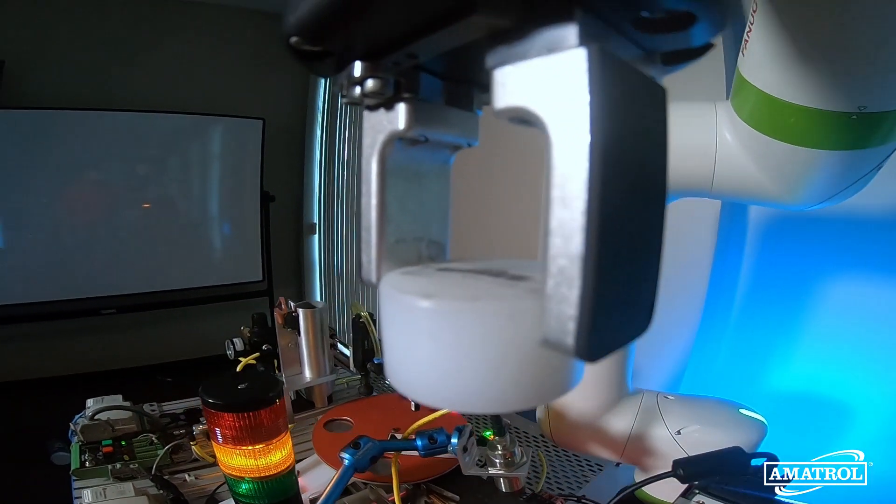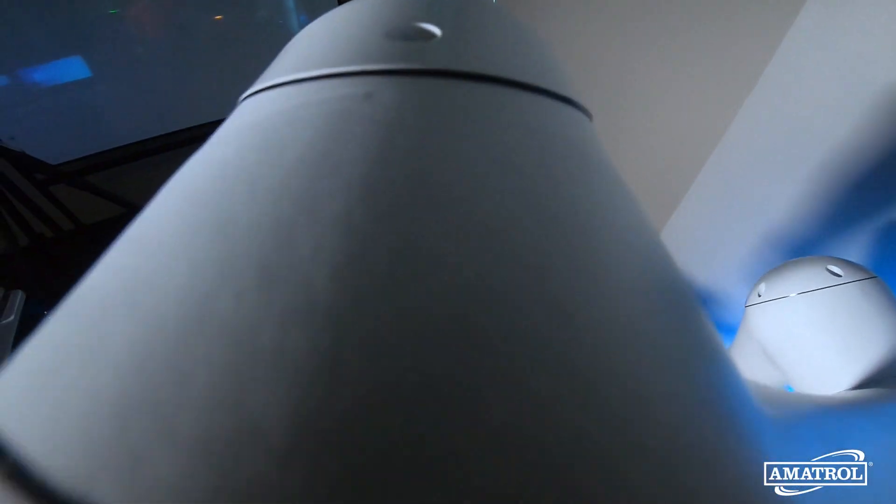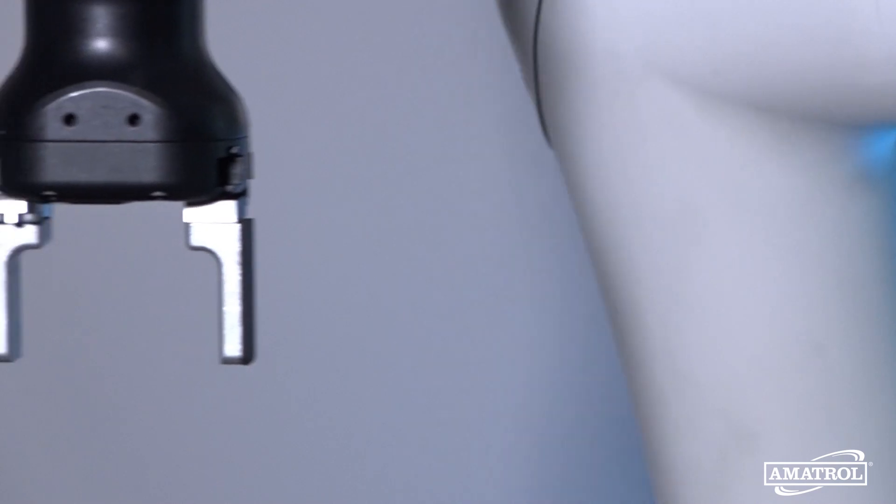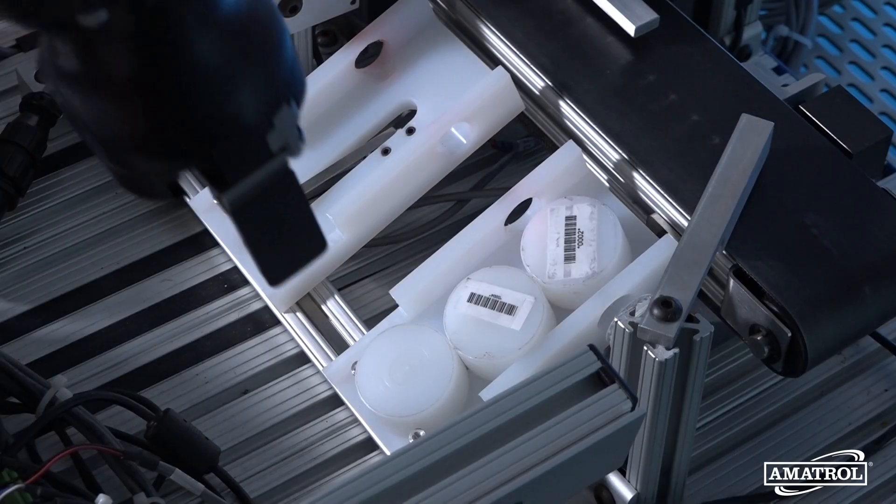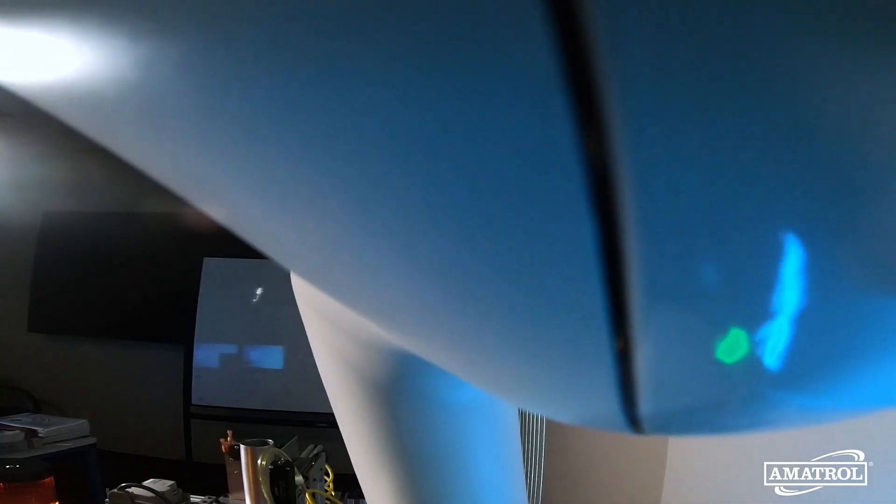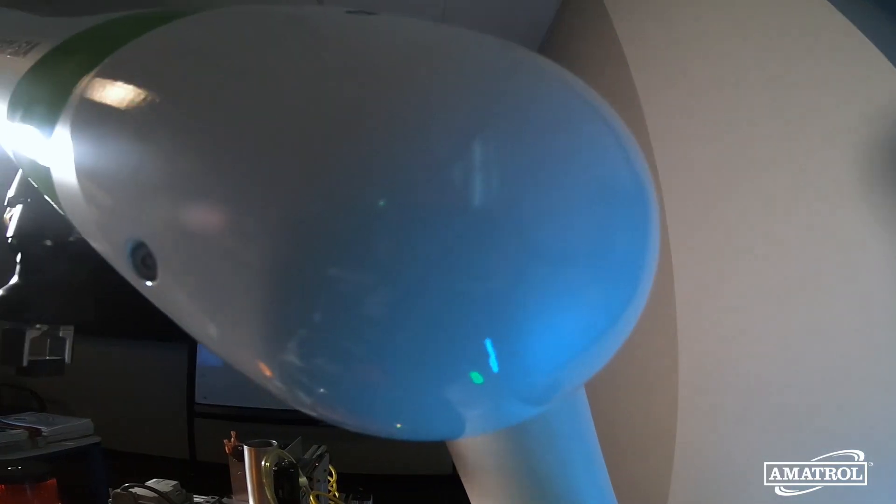Learners using the FANUC COBOT with Amitrol's Tabletop Smart Factory gain hands-on experience with robot material handling concepts. They'll program the robot to retrieve parts from sliding chutes and place them in either a gravity feeder or bins mounted on the workstation.